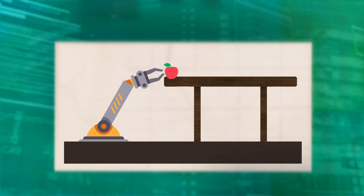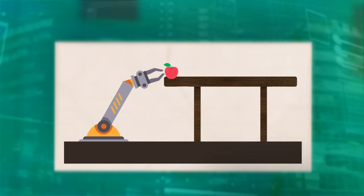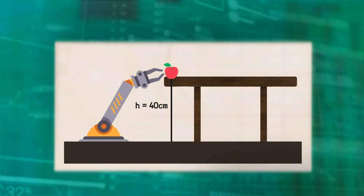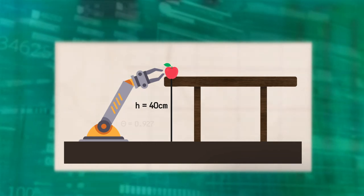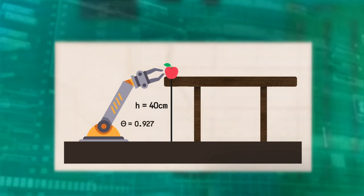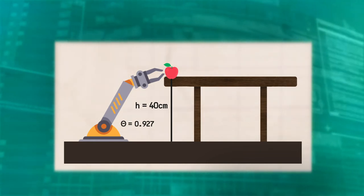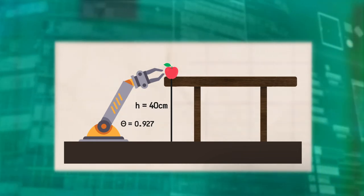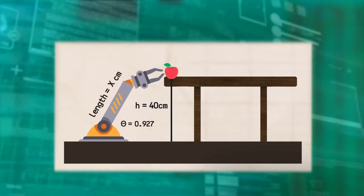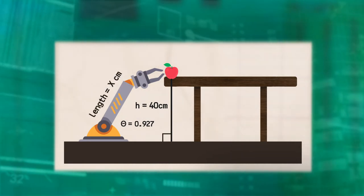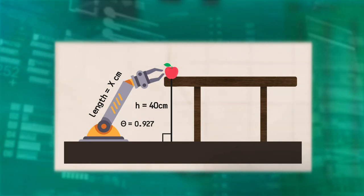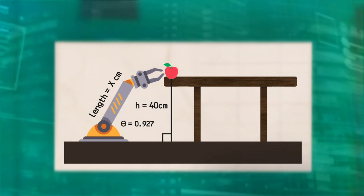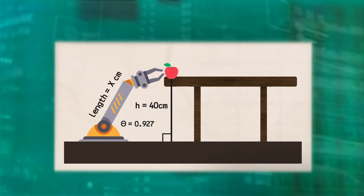Let's start by drawing a picture of our scenario. Our object is on the table, and is 40 centimeters above the ground. The robot is on the floor, and its arm is making an angle of 0.927 radians with the floor. We use Greek letters to mark angles usually, so we will label that angle as theta, and x is our unknown length of the arm. We know this forms a right triangle with a height of 40 centimeters, an angle theta of 0.927 radians, and a hypotenuse of unknown length x.